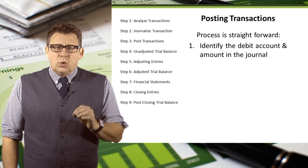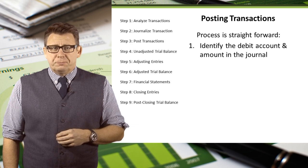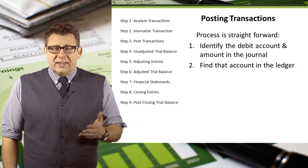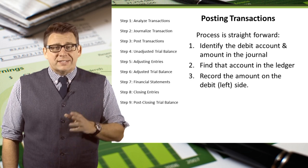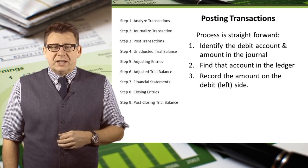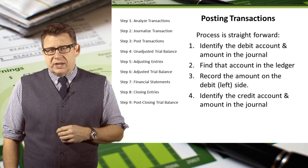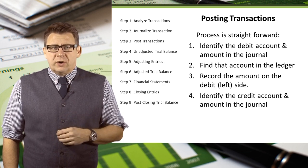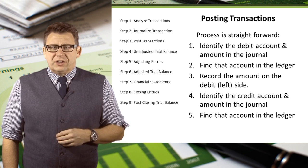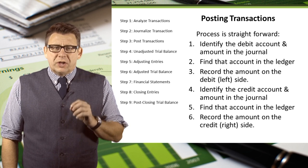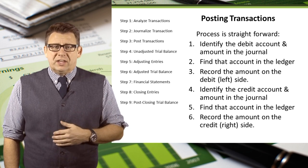It starts with identifying the debit account and the amount from the journal. Then find that account in the ledger and record the amount as a debit, or on the left side of the account. Then do the same thing for the credit account: identify the credit account and amount, find that account in the ledger, and record the amount as a credit, or on the right side of the account.